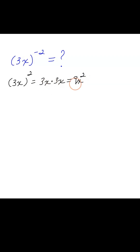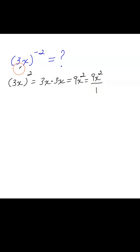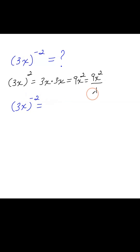I just took 3 times 3 is 9, and x times x is x squared. We can rewrite this as 9x squared over 1 — it doesn't change anything when you divide by 1. Well, that negative exponent: I just flipped this. It becomes 1 over 9x squared.